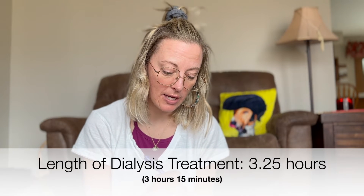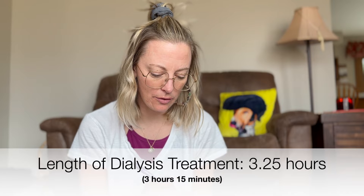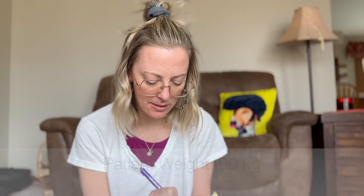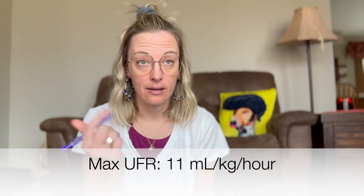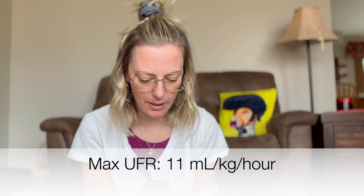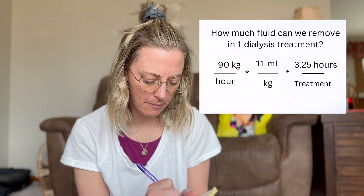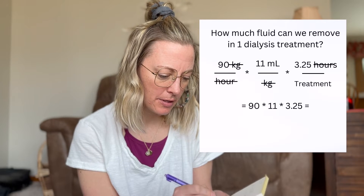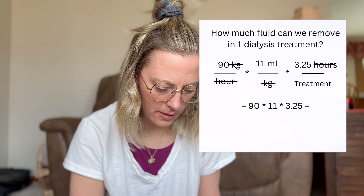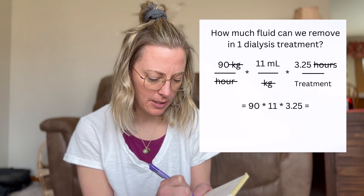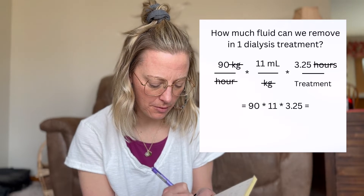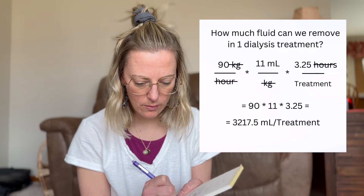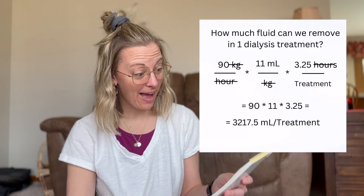Let's do one a little differently. Somebody is on the machine for three hours and 15 minutes — that's 3.25 hours. They weigh 90 kilograms and their max UFR is 11 mils per kilogram per hour. I'm looking for mils per treatment. 11 mils times 90 kilograms — that's 990 mils per hour — times 3.25 hours equals 3,217.5 mils per treatment.